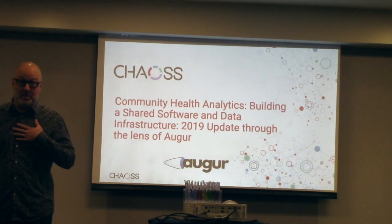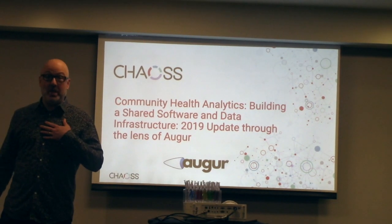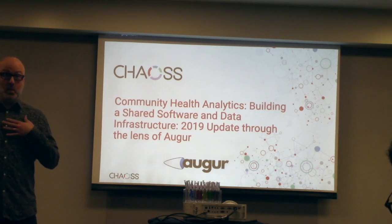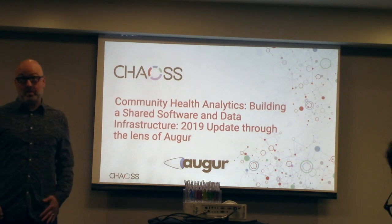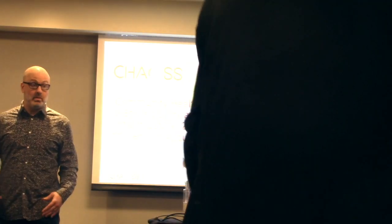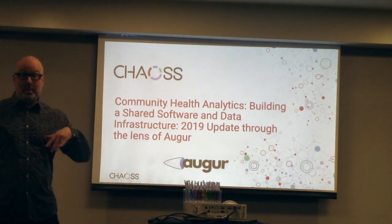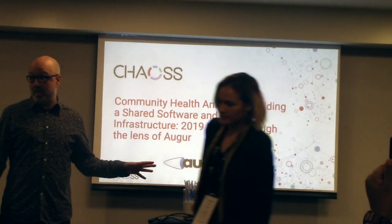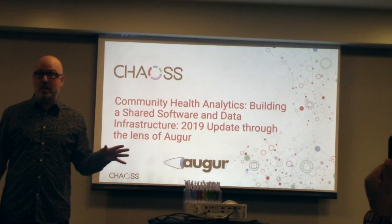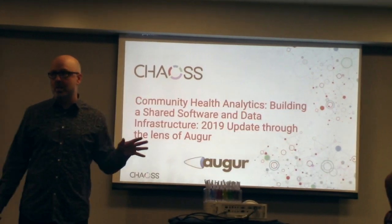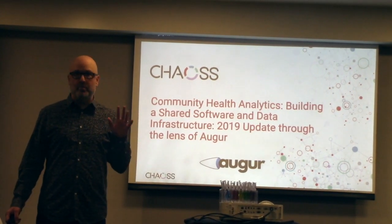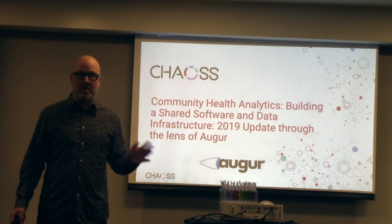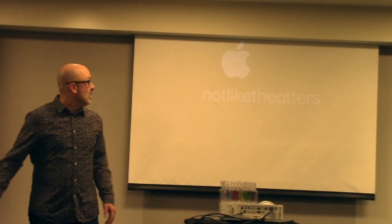My name is Sean Goggins. I'm a professor at the University of Missouri and I'm working with the CHAOSS project, now on the CHAOSS board, which basically means I get to vote on things every now and then. I'm here to present two things: a CHAOSS update on each of the five working groups and through the lens of the software that we built in my lab to prototype some of the CHAOSS metrics, called Augur.